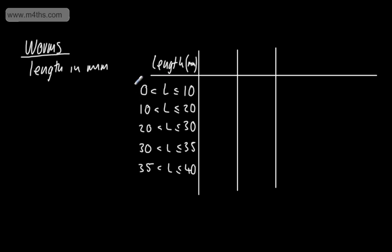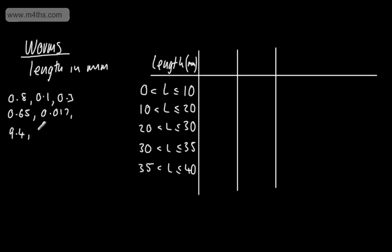For example, if one of my worms was 0.8 mm, or 0.1, 0.3, 0.65, or 0.017 — these could all go in the first group. We could also have 9.4, 7.8, 9.36, or just under 10, say 9.987 — all going in that first category too.